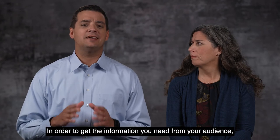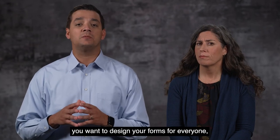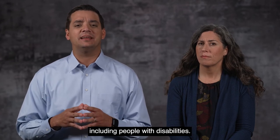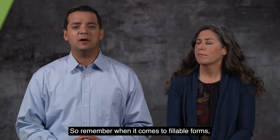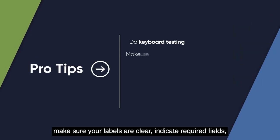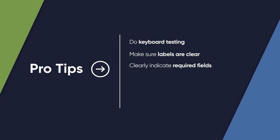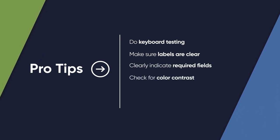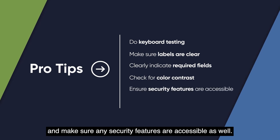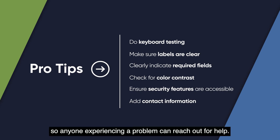In order to get the information you need from your audience, you want to design your forms for everyone, including people with disabilities. So remember, when it comes to fillable forms: do keyboard testing, make sure your labels are clear, indicate required fields, check for color contrast, and make sure any security features are accessible as well. Finally, think about adding your contact information so anyone experiencing a problem can reach out for help.